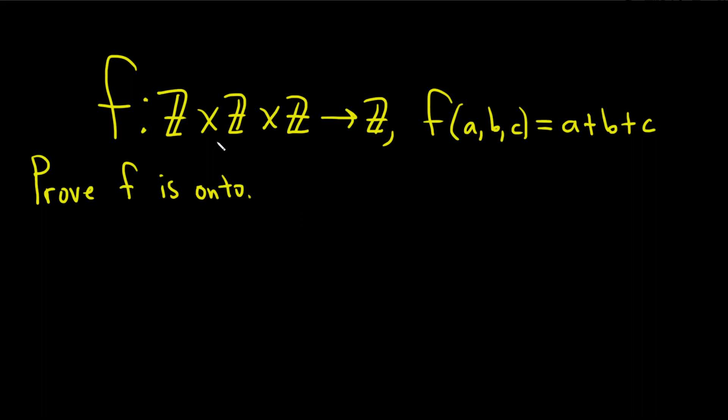So in this problem we have a function from Z cross Z cross Z into Z. It's defined as follows: f of a, b, c is equal to a plus b plus c. And the question is to prove that f is onto, so this also means surjective, same thing.